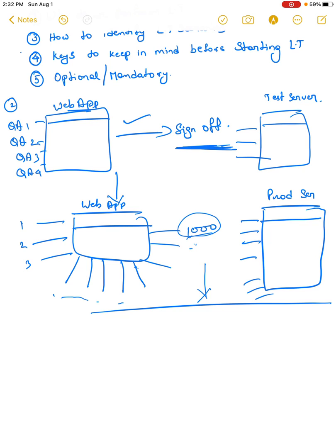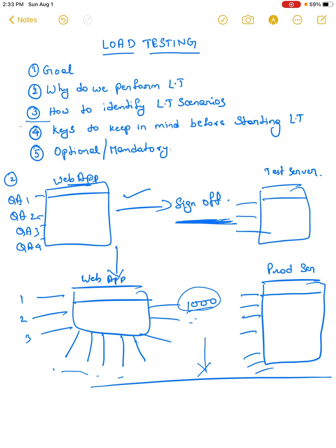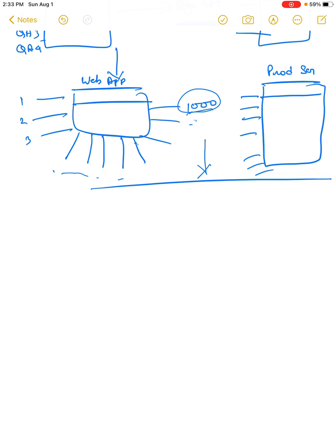If a thousand users are using your application and it is a critical, widely-used application, a thousand users is not a small set. So what are we going to do? The third point is how to identify load testing scenarios. There might be two types of applications. How do we determine whether the load is a thousand, ten thousand, or five thousand? That conclusion comes after multiple discussions with the business team.